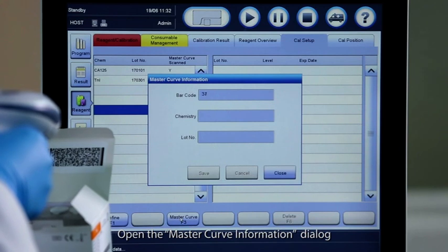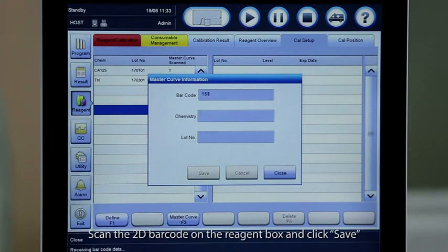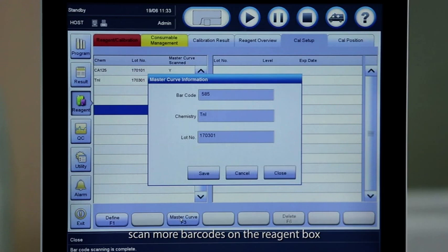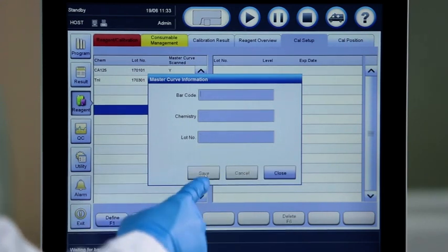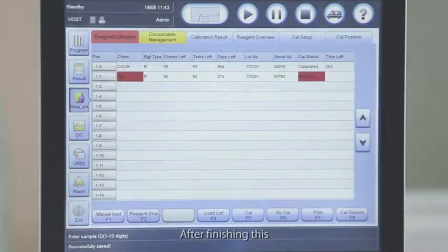Next step is to import master curve information. Open the master curve information dialog. Scan the 2D barcode on the reagent box and click save. To define more master curves, scan more barcodes on the reagent box.